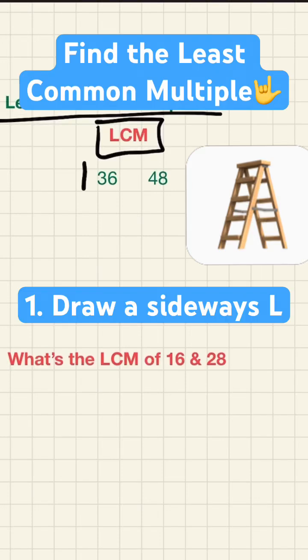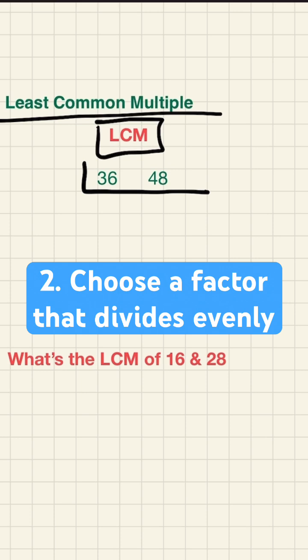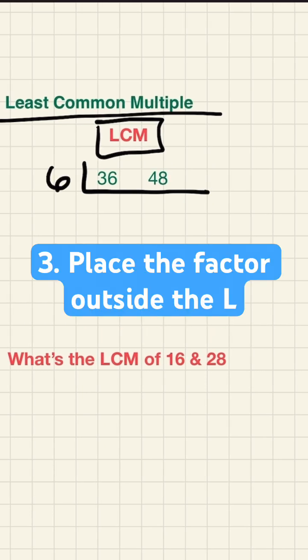Let's find the LCM, least common multiple, using the ladder method. First, put that L under the two numbers I want to find the LCM for. Then pick a number that I can divide evenly into both those numbers.